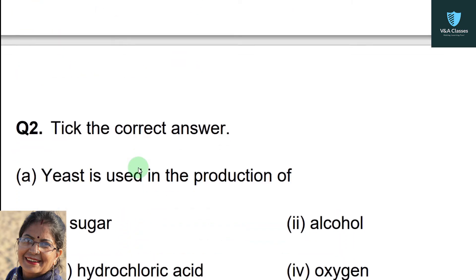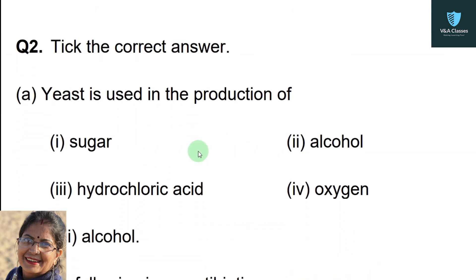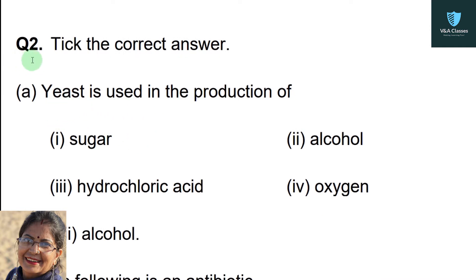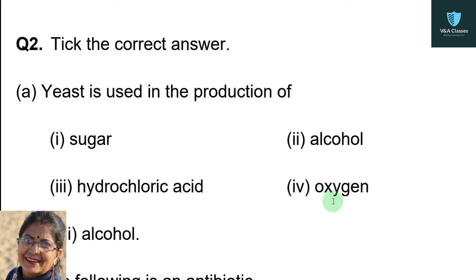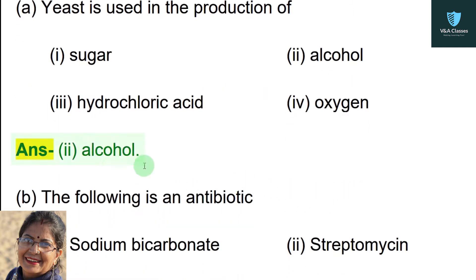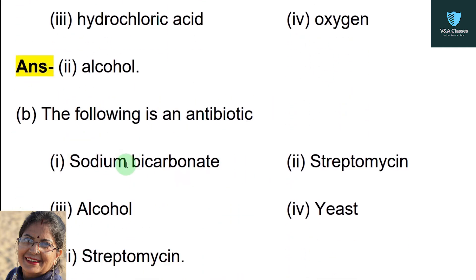Now question 2 — select the correct answer. First question: yeast is used in the production of — first option sugar, second option alcohol, third option hydrochloric acid, fourth option oxygen. Correct answer is alcohol.